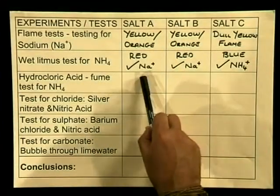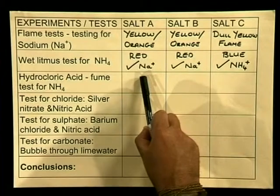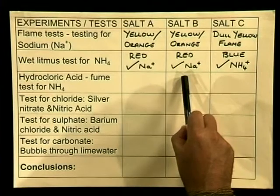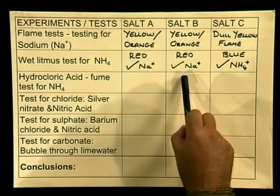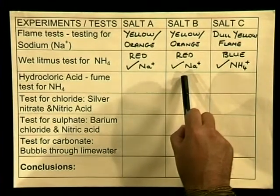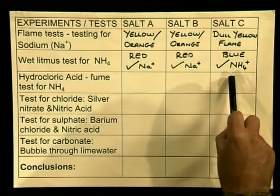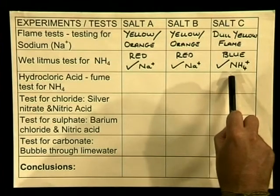In test tube A the litmus stays red, so it must definitely be the sodium cation. In test tube B the litmus remains red as well — definitely the sodium cation. While in test tube C the litmus turns blue, which confirms the presence of the ammonium cation. We can confidently say that A and B are our sodium salts and C is our ammonium salt. We have successfully identified the cations in our unidentified floating objects.